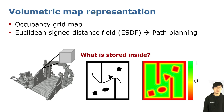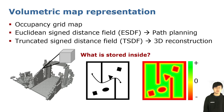Unfortunately, ESDF cannot be built directly from sparse observations. The workaround is to use the easy-to-integrate Truncated Signed Distance Field, TSDF, as an approximation. TSDF is enough for surface 3D reconstruction, but for trajectory optimization-based path planning, we need to go a step further to ESDF.